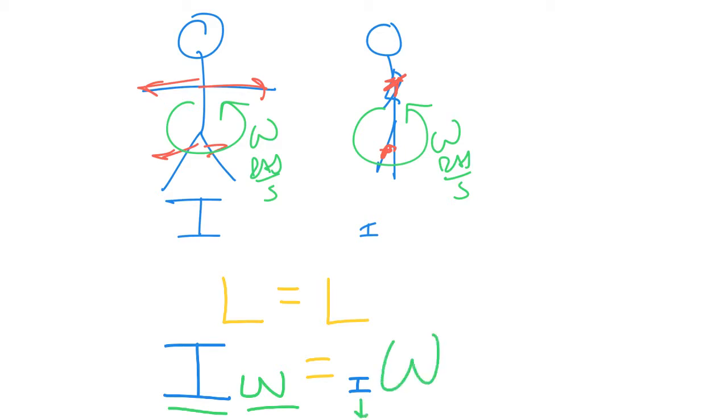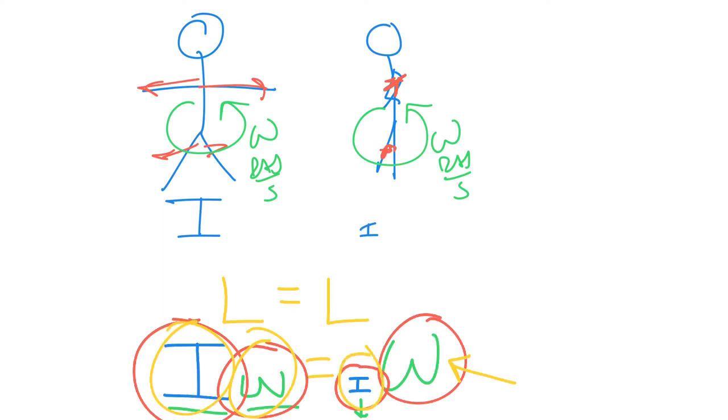So for a problem like this, what you need to do is take the initial rotational inertia times the initial angular momentum, and that equals the finals. In this case, we're looking for the final angular velocity, so we would know the other three pieces and then you can solve for that.